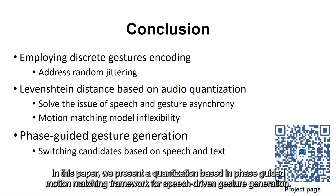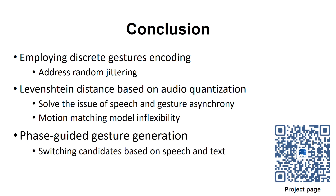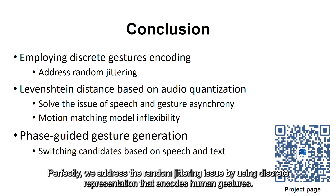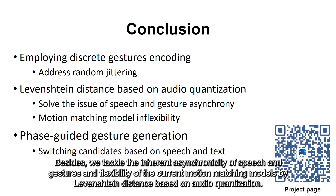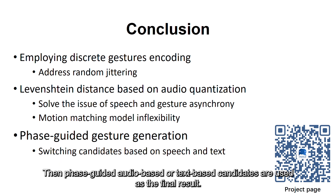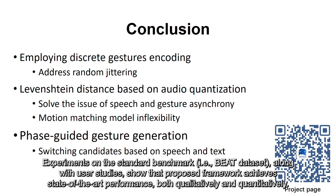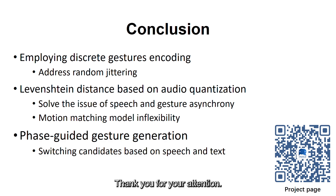In this paper, we present a quantization-based and phase-guided motion matching framework for speech-driven gesture generation. We address the random jittering issue using discrete representation that encodes human gestures, and tackle the inherent asynchronicity of speech and gestures using Levenshtein distance based on audio quantization. Phase-guided audio-based or text-based candidates are used as the final result. Experiments on the BEAT dataset, along with user studies, show that the proposed framework achieves state-of-the-art performance both qualitatively and quantitatively. Thank you for your attention.